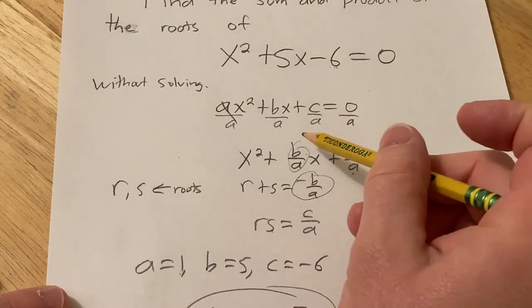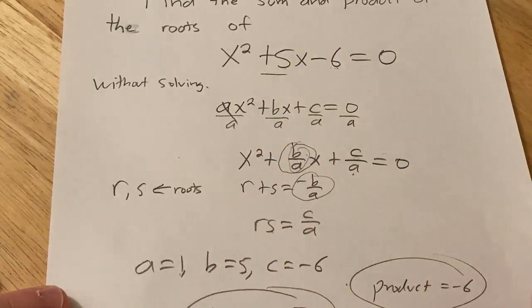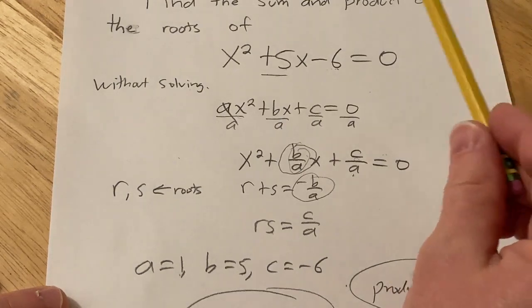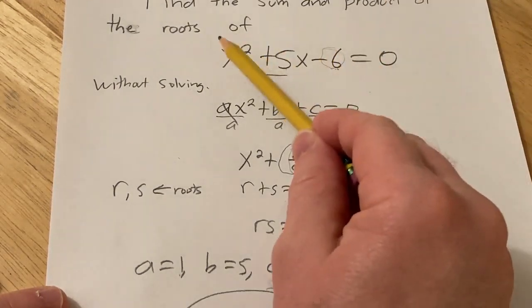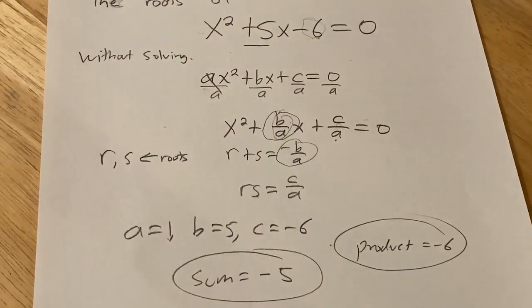So you can just get it by looking at this, right, so the opposite of whatever is here is going to be the sum, and the product is going to be here, as long as this coefficient is 1, right, because you're dividing by a to come up with this memory trick. Kind of fun. Good luck.